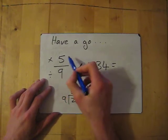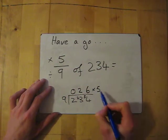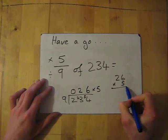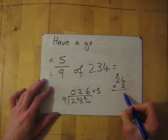So now we need to times by the top. So we need to do 26 times 5. 5 times 6 gives me 30.